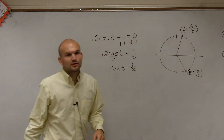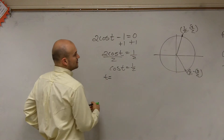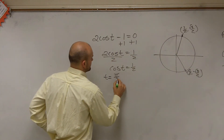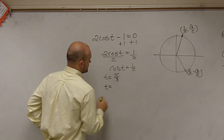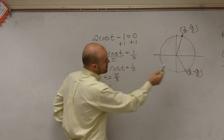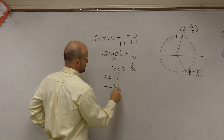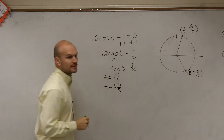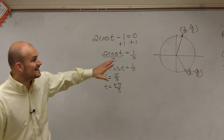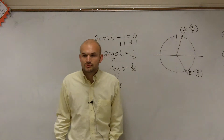We can say it's going to be at those two values. It's t equals π/3, and t also equals 5π/3. That makes sense — those were your two solutions on the interval of 0 to 2π.